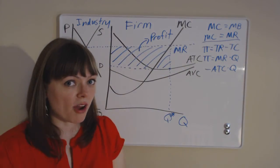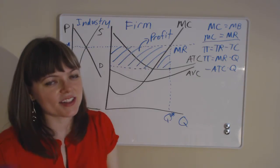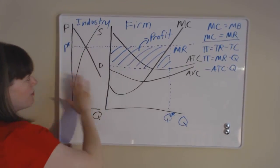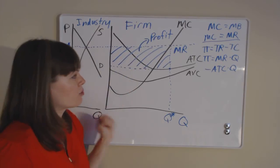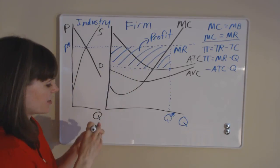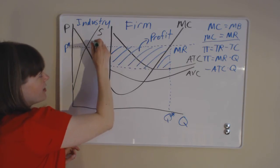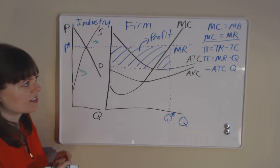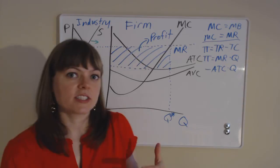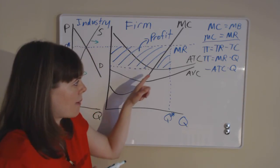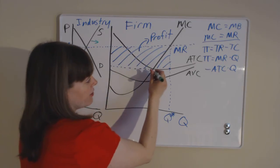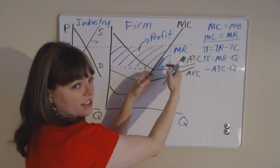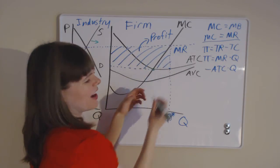This firm is making a profit in the short run. What happens in the long run? We go back to the industry — people get jealous of that profit box and enter the industry. As they enter, the supply curve shifts out. It will shift out until long-run profits are driven down to zero, which happens where average total cost equals marginal cost.